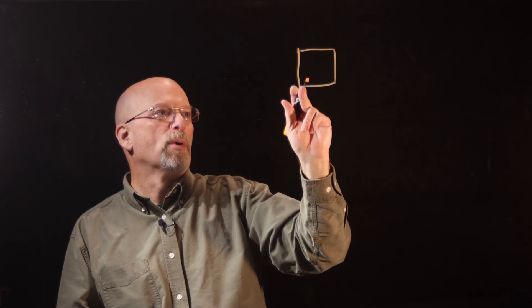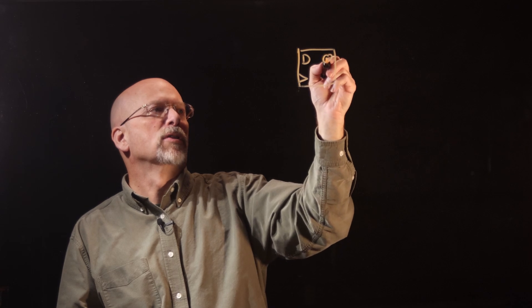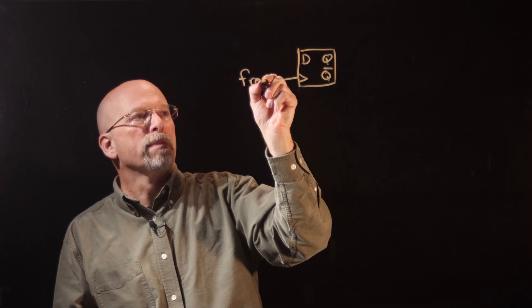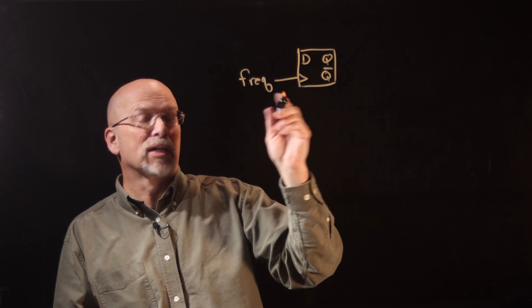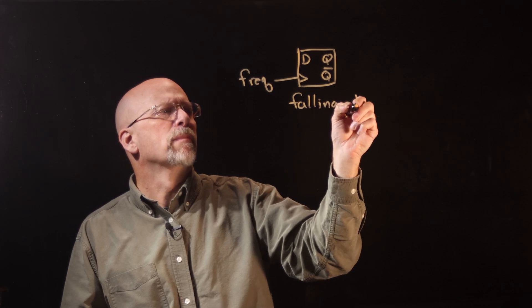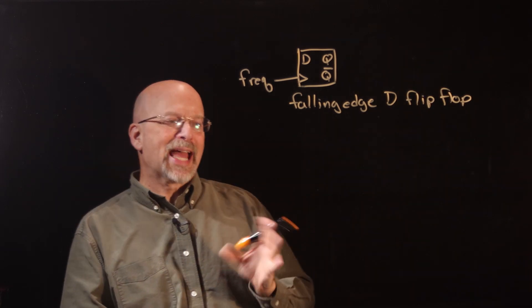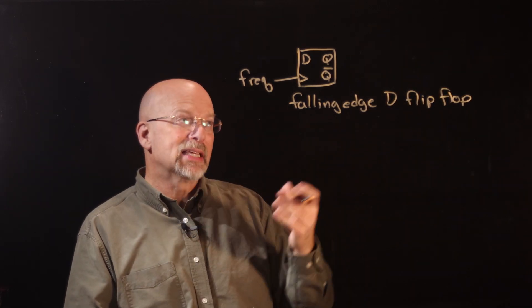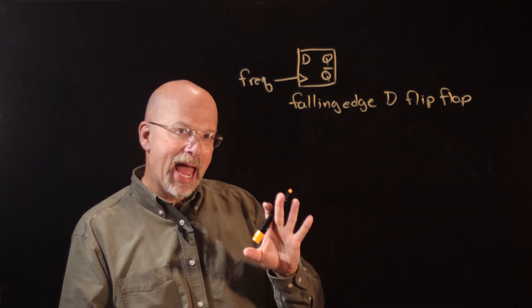It was a really simple circuit. We simply had our D flip-flop with the D input, the clock input, then Q and Q-bar output. What happened was we put our frequency into the clock input. Now, we're going to use a falling-edge D flip-flop this time, and we're actually going to cascade them. When we cascaded these flip-flops, every time we added another flip-flop, we divided the frequency in half yet again.